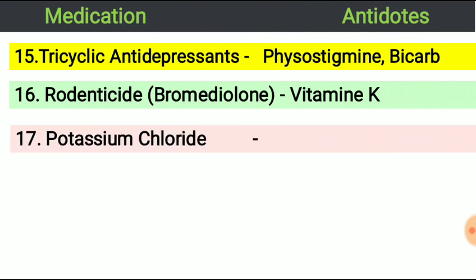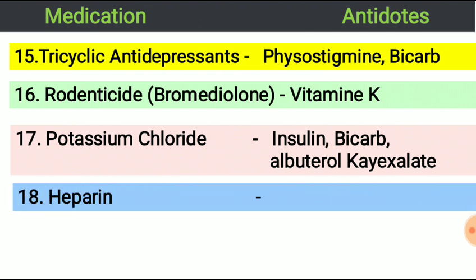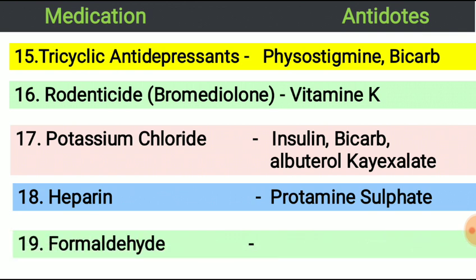Next, potassium chloride. The antidote of potassium chloride is insulin, bicarbonate, albumin, and kayexalate. Next, heparin — widely used as an anticoagulant — its antidote is protamine sulfate. Next, formaldehyde — its antidote is folic acid.